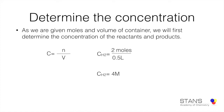Similarly, we can find the concentration of iodine. The number of moles of iodine is 1 mole and the volume is 0.5 liters, so the concentration of iodine is 1 divided by 0.5, which is 2 M. Now that we have determined the concentration of hydrogen and iodine, we can substitute these numbers into the ICE table.